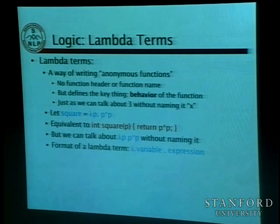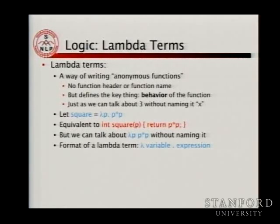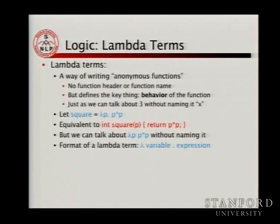Higher-order functions are functions that take functions as arguments and may return functions as their values. To be able to do that we use lambda calculus. When we write functions in Java we give them names — but the key thing is the behavior of the function. We should be able to have functions that do something without giving them names. Lambda calculus is a notation for producing and processing functions that don't have to have names, so you can invent them on the fly as you need them.